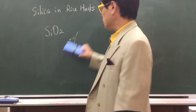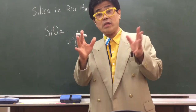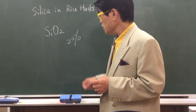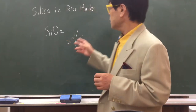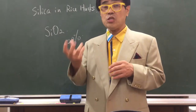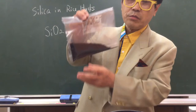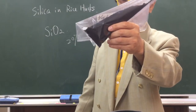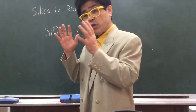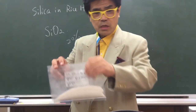Rice husk has about 20–25% silica by weight, so it's actually a lot. To get the silica, you have to burn — incinerate — the rice husk first. If you incinerate rice husk without control, you get this dark black ash. That's not good.